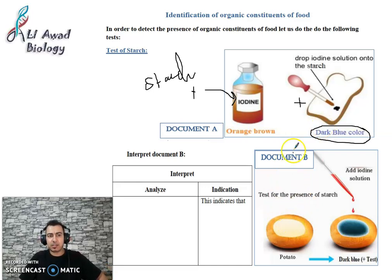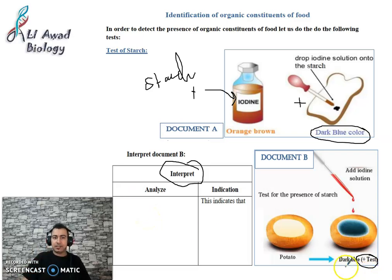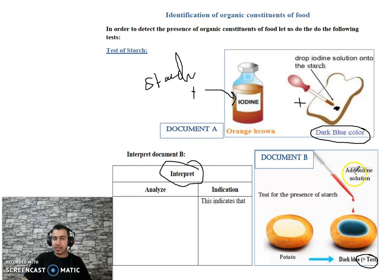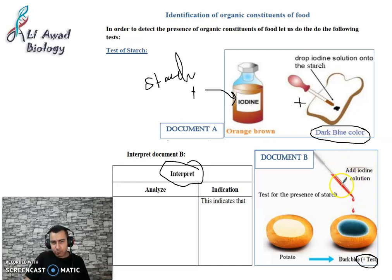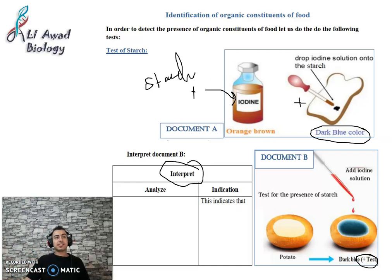Let's take a piece of potato (document B) and add iodine solution — you see dark blue color, so the test is positive. If I ask you to interpret this experiment, 'interpret' means analyze plus give an indication or small conclusion. I always start with the result: dark blue color, positive test is obtained after adding iodine solution (orange-brown) to a piece of potato. This indicates that potato contains starch.